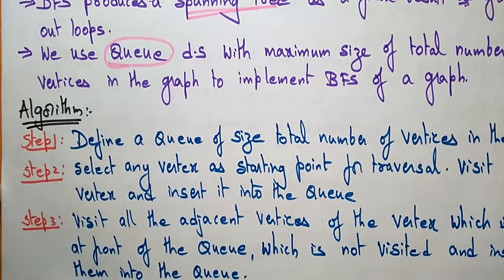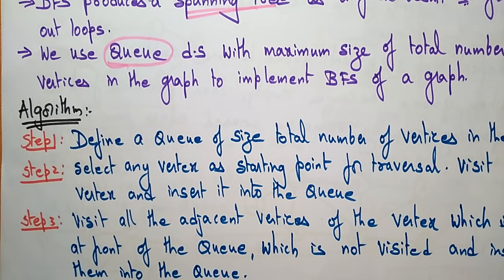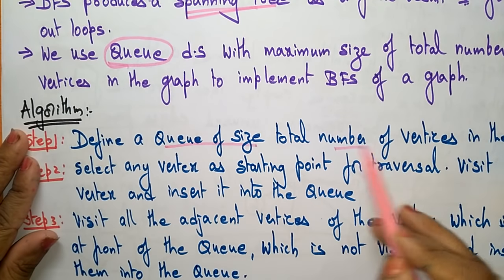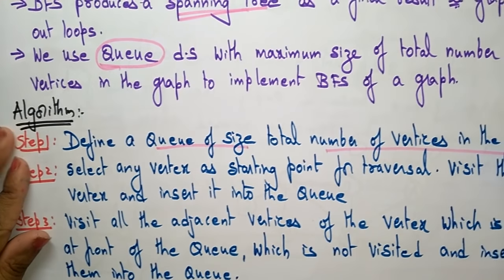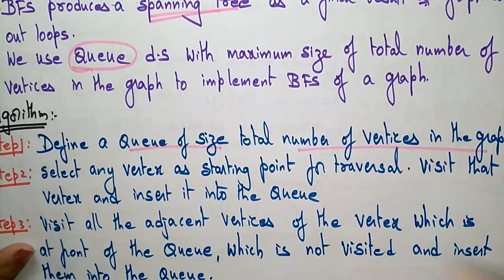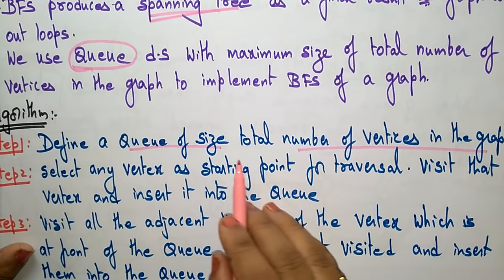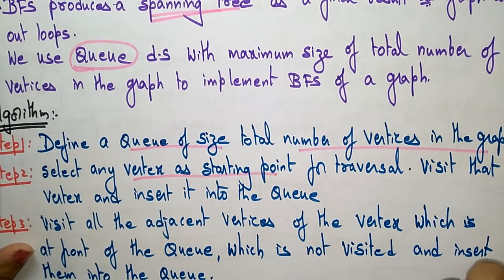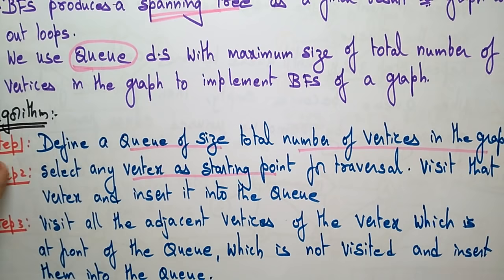Now let's see the algorithm. Based on this algorithm we will implement an example. First, define the queue size based on the number of vertices in the graph. Then select any vertex as a starting point, just like in DFS. Visit that vertex and insert it into the queue.